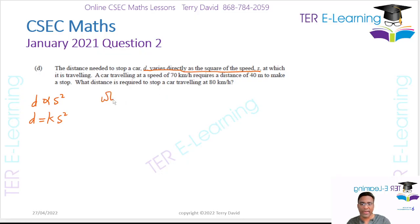So when your speed is 70, so s is equal to 70, they are telling us that my distance is 40. So we're going to use that information to figure out k. So therefore, 40 is equal to k multiplied by s², which is 70².